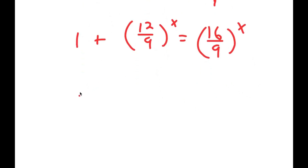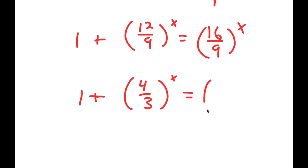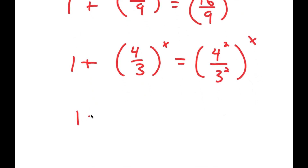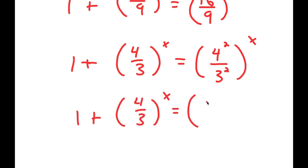Now, 12 over 9 simplifies to 4 over 3. And 16 over 9 simplifies to 4 squared over 3 squared. Now, 4 squared over 3 squared is the same thing as 4 over 3 squared, and now I have this to the power of x.